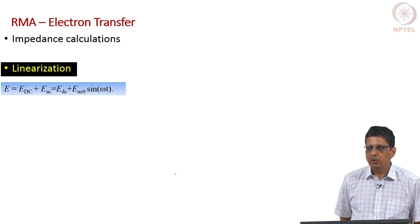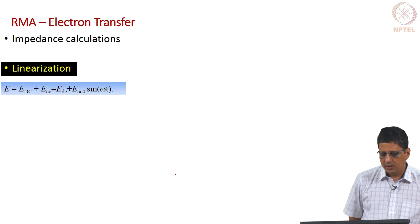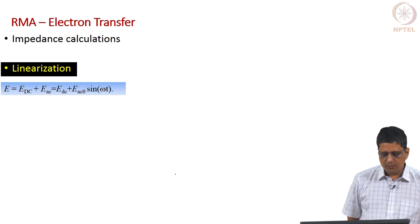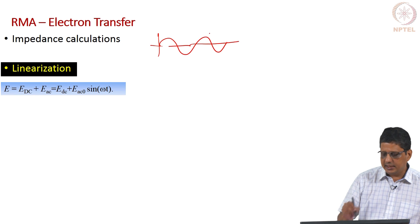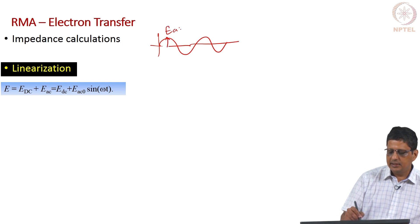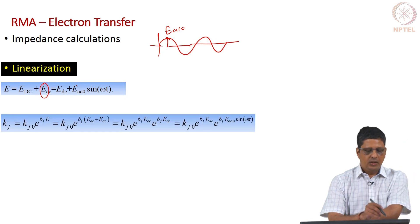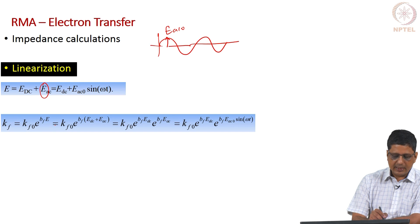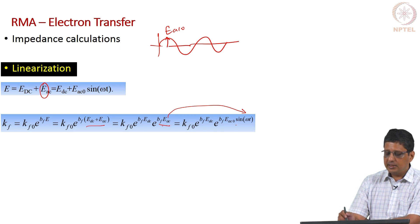Now I want to apply AC potential and calculate the impedance. If I apply AC potential, I can write the total potential as DC plus AC: E_DC is the DC component and E_AC = E_AC0·sin(ωt), where E_AC0 is the amplitude. If I write the rate constant as a function of potential, I can expand it and separate DC and AC components because they are in the exponent. So E_AC is a function of time, and E_AC0 is the fixed amplitude that we set.